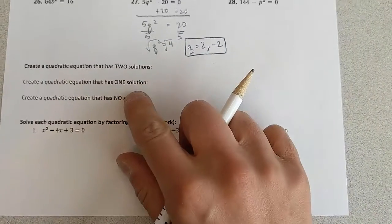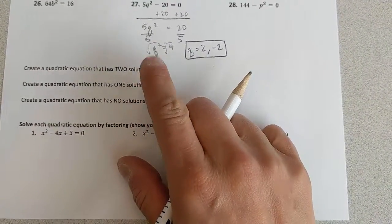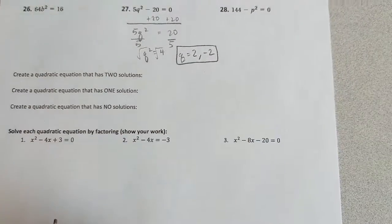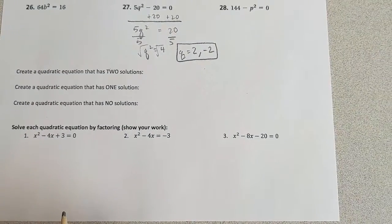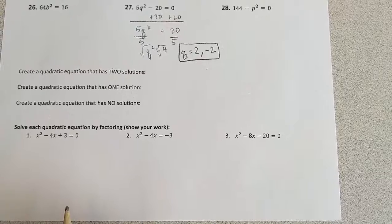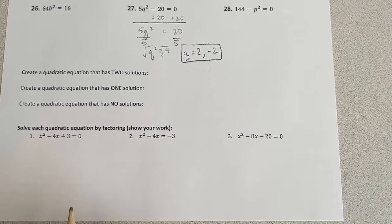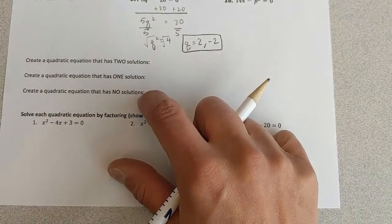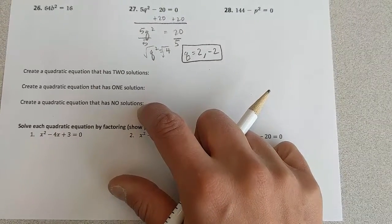When you come to creating a quadratic equation that has two solutions, some hints that I would think about: Think of what the graph might look like if there's going to be two solutions, versus one solution versus no solution. That might be a good place to start.